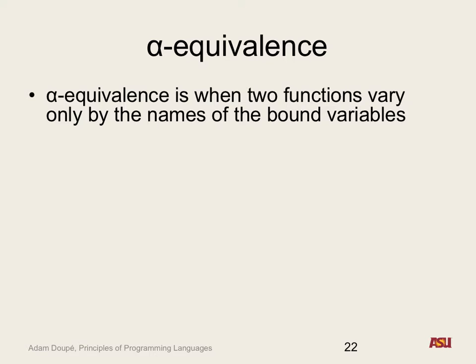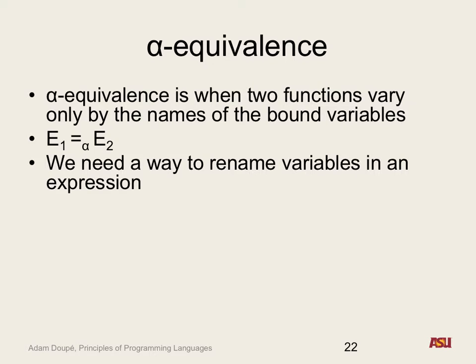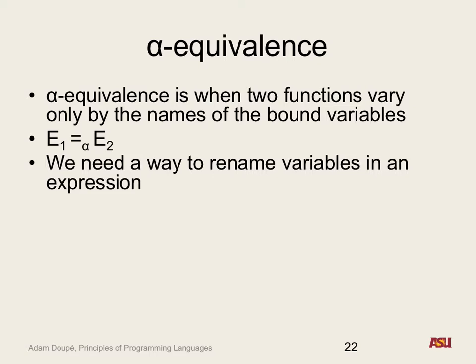Alpha equivalence is the notion that two lambda expressions are the same if they vary only in the names of bound variables. We use an equals sign with alpha below it to say expression one is alpha equivalent to expression two. To do this, we need a principled renaming operator — some way to say, rename this ID to something else. So we want to define some kind of operator to do this renaming.